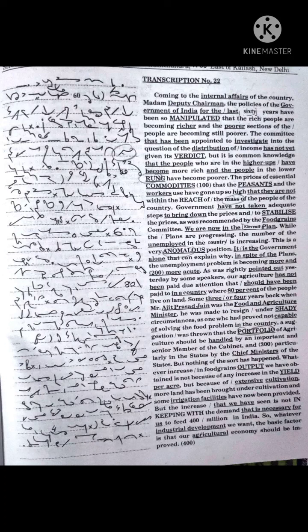Some three or four years back when Mr. Ajit Prasad Jain was the Food and Agriculture Minister, he was made to resign under shady circumstances as one who had proved not capable of solving the food problem in the country. A suggestion was thrown that the portfolio of agriculture should be handled by an important and senior member of the Cabinet, and particularly in the States by the Chief Ministers of the States, but nothing of the sort has happened.